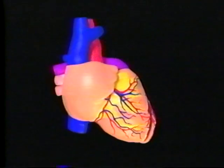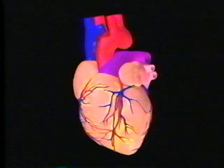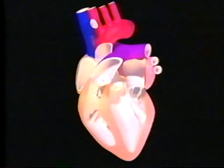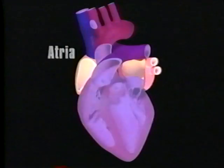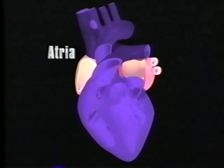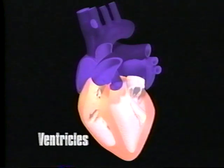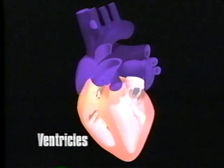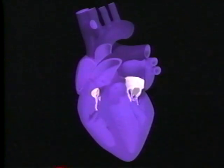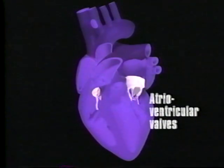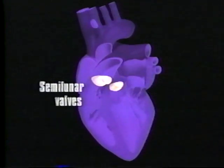Your heart is constantly at work receiving and pumping a massive amount of blood. The heart has four chambers. The two thin-walled upper chambers called atria collect blood returning to the heart. The lower chambers with thick muscular walls are called ventricles. The ventricles pump blood to all of the body organs. Membranous flaps called valves keep blood flowing in a forward direction. On each side of the heart, an atrioventricular valve prevents backflow between the atrium and ventricle. Semilunar valves prevent backflow between the ventricles and their attached vessels.